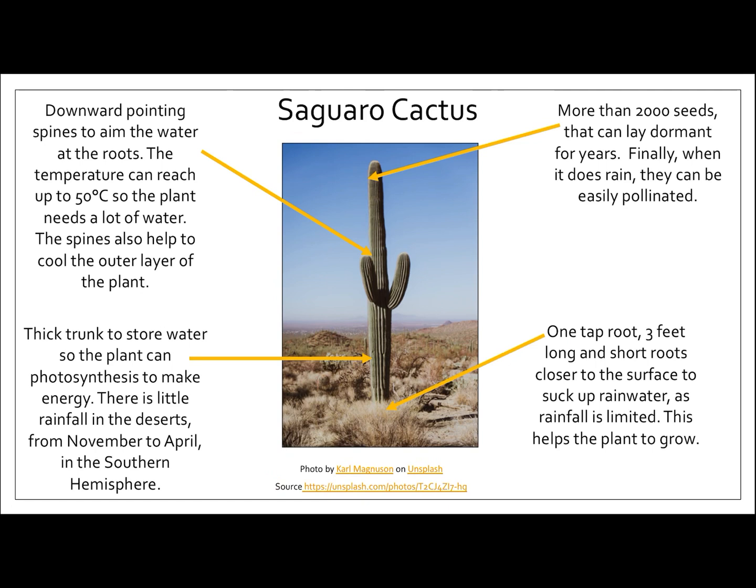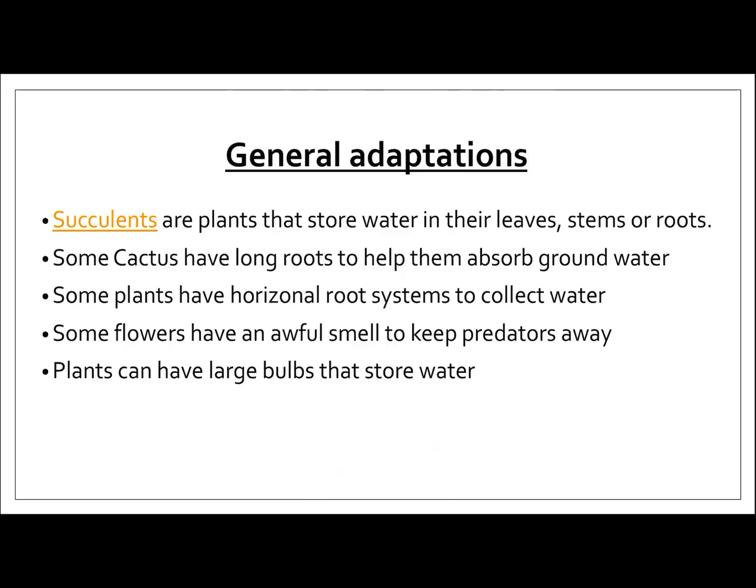Finally, this plant has got one taproot three feet long, and it's also got shorter roots that are closer to the surface to suck up the rainwater. This is because the rainfall is limited in the desert, and this helps the plant to grow.